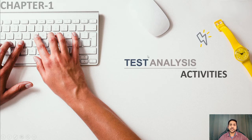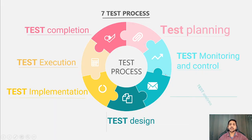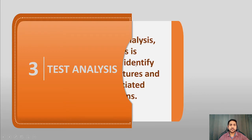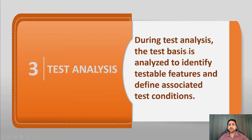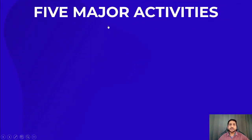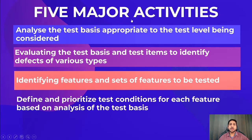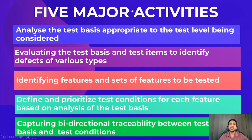We will start with the first activity - test analysis. We have to see what all tasks we are going to do under it. This is the third activity - so planning, monitoring, and then analysis comes. During test analysis the test basis is analyzed to identify testable features and define associated test conditions. We analyze the requirement and derive the test conditions. There are five major tasks which we perform under test analysis.